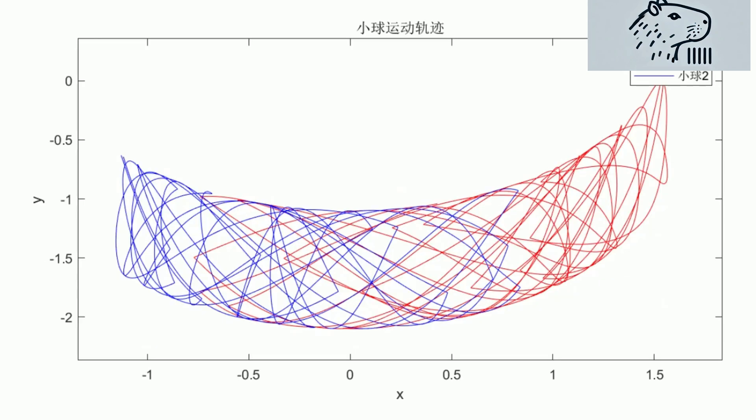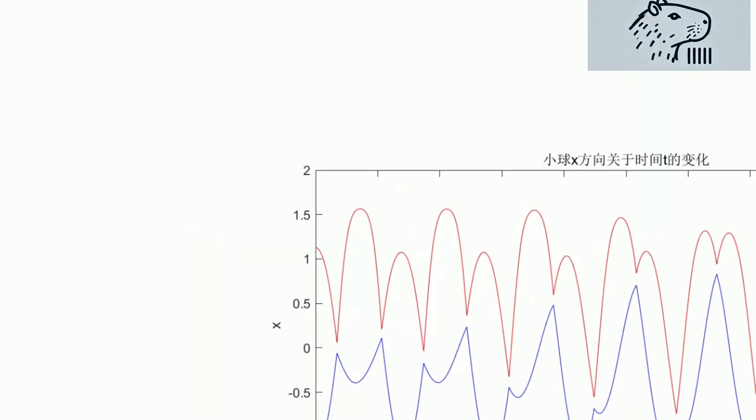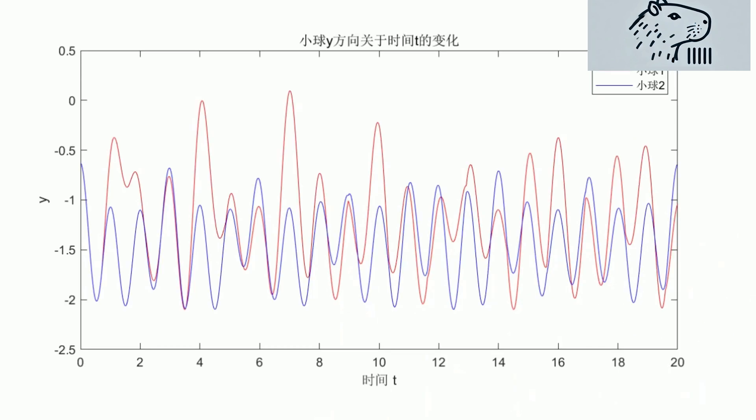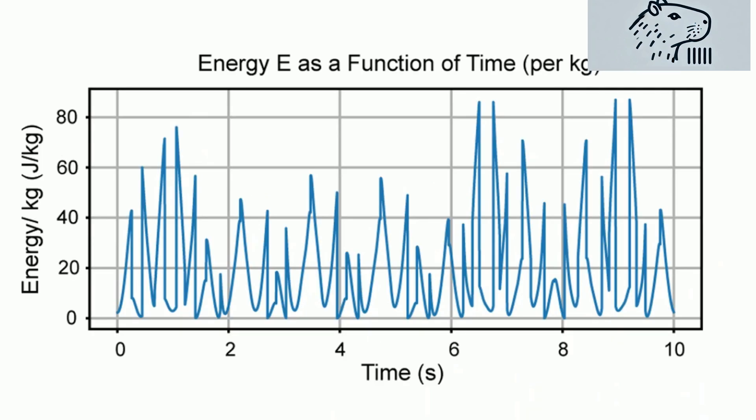Watch our COMSOL simulations bring these dynamics to life. These simulations illustrate how varying the pivot's oscillation parameters affects the motion of the balls, from regular oscillations to chaotic collisions. The visualizations help you understand the complex interplay of forces within the system.